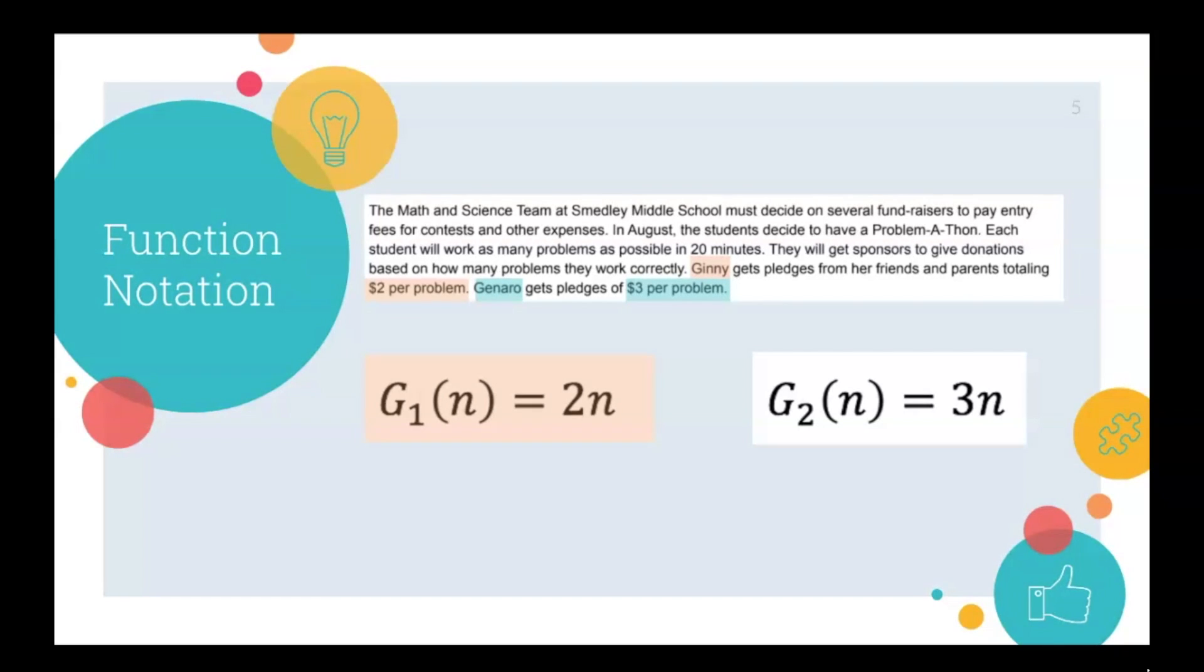Gennaro earns three dollars per problem. We're going to refer to him as G2. So Gennaro's earnings are a function of the number of problems worked and that is equal to three dollars per problem.